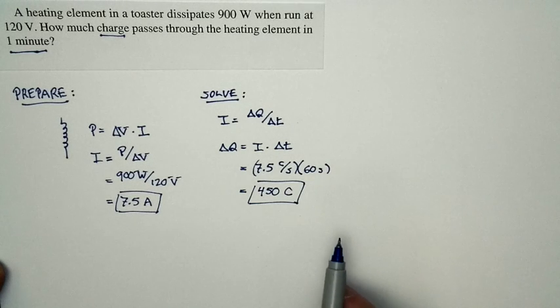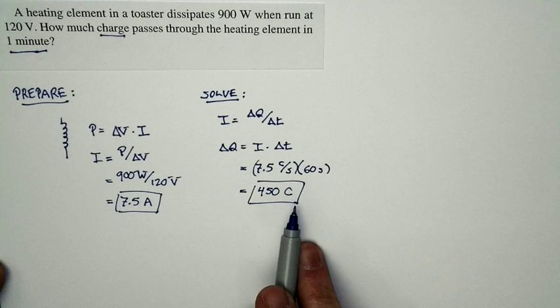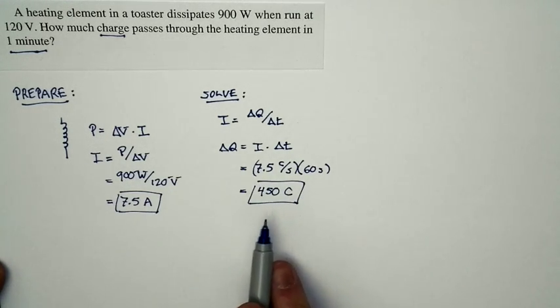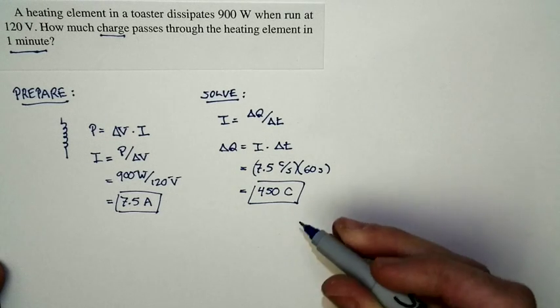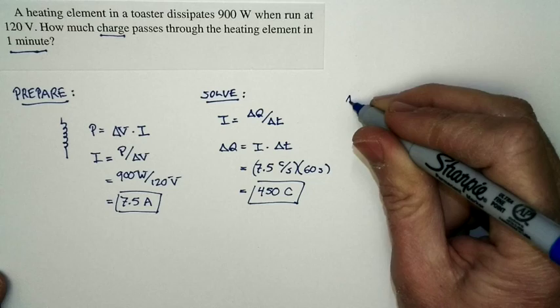And so this tells us that we are getting a lot more charge involved here. But it's not piling up. It's just flowing through. The toaster is everywhere electrically neutral. There's just charges in motion, and there's a significant amount of charge indeed.